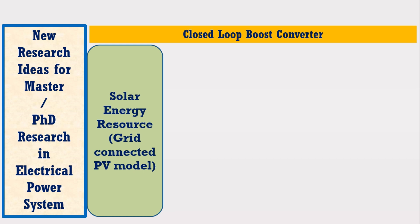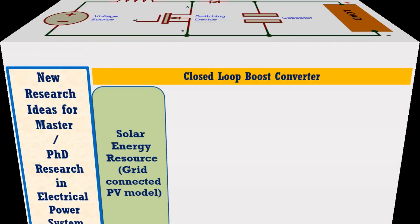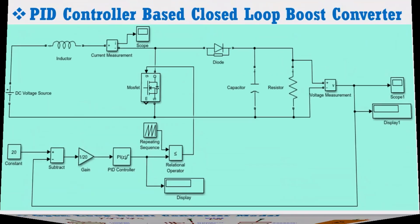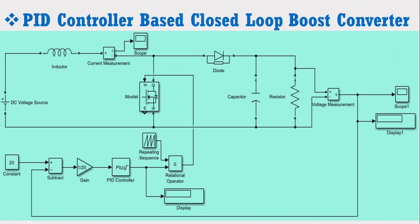This boost converter can be operated in open loop mode as well as in closed loop mode. In open loop mode, it provides variable fluctuating voltage. Therefore, in order to get the constant desired output voltage, boost converter in closed loop mode is preferred.